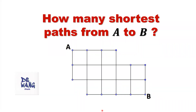Hello, everyone. I'm Dr. Wang. Here is the question: How many shortest paths are there from point A to point B? What does this mean? We move, starting from point A to reach point B. You can only move to the right or move down to the south, to the east. This will be the shortest path. How do we count how many ways, how many paths?